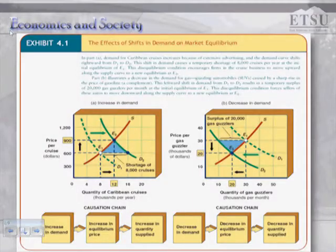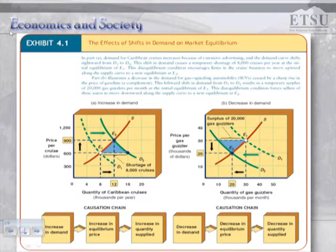Looking at this competitive equilibrium price and quantity, in the left-hand panel we have the market for cruises, measured in thousands per year. The price is on the vertical axis and quantities are on the horizontal axis. We start out in equilibrium with a price of $600 and 8,000 units being produced in the market.